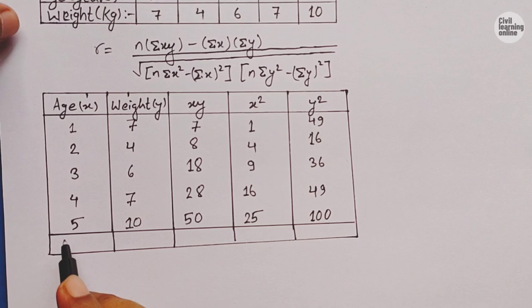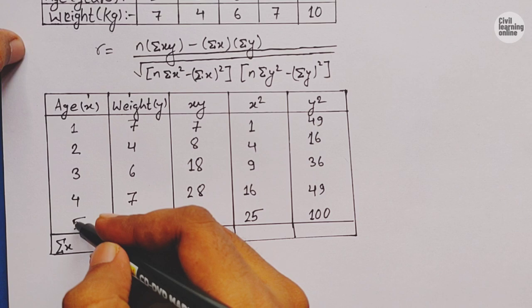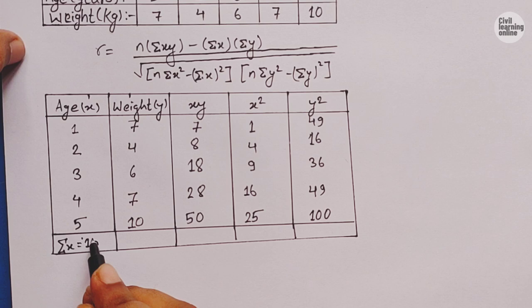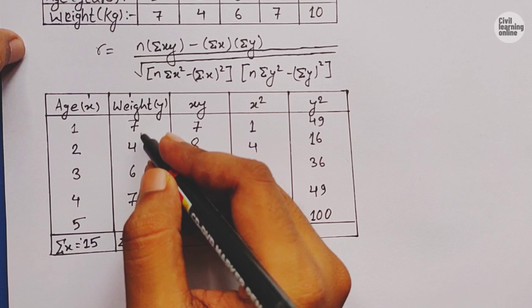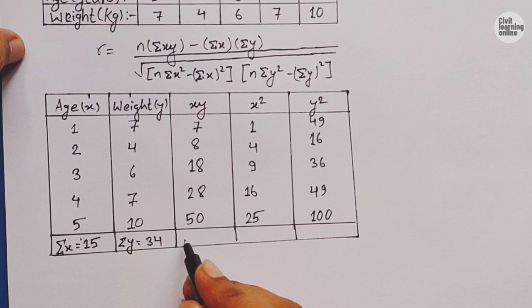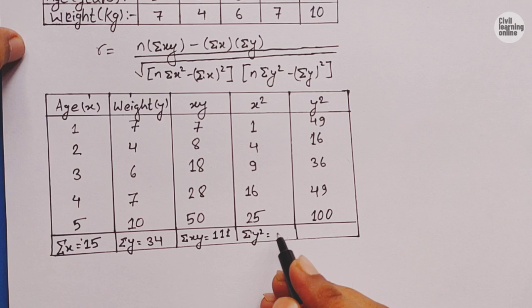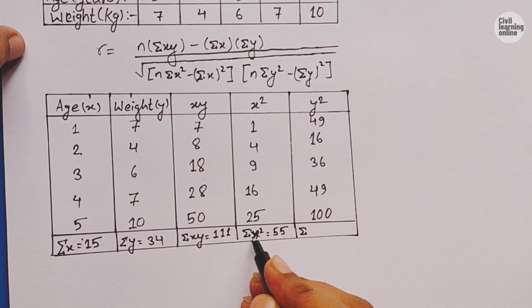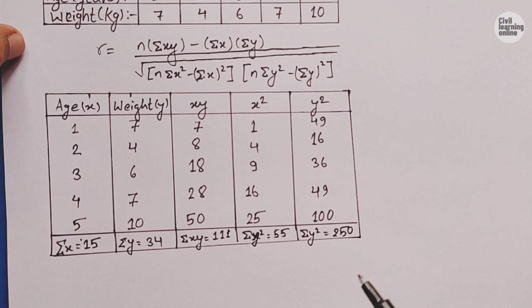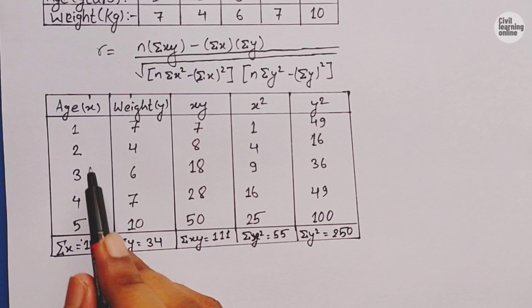Adding up the columns: summation x = 1+2+3+4+5 = 15. Summation y = 7+4+6+7+10 = 34. Summation xy = 7+8+18+28+50 = 111. Summation x² = 1+4+9+16+25 = 55. And summation y² = 49+16+36+49+100 = 250.